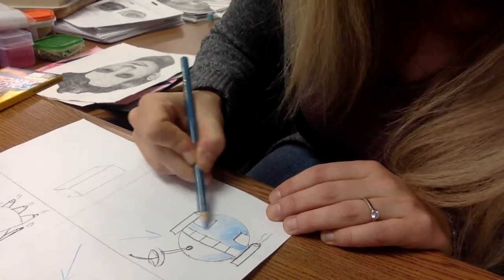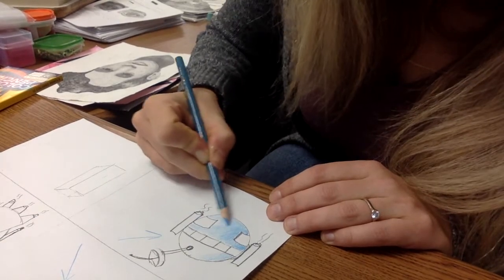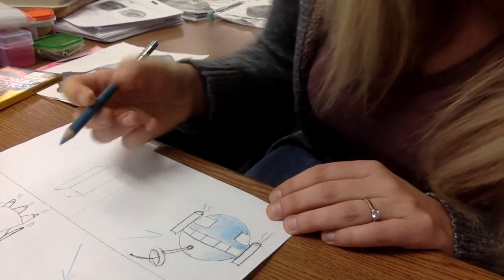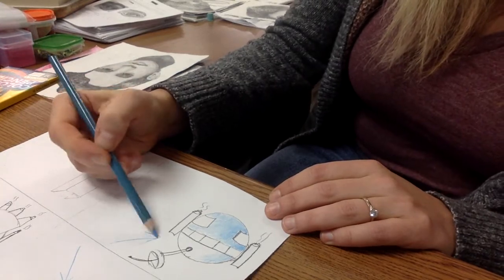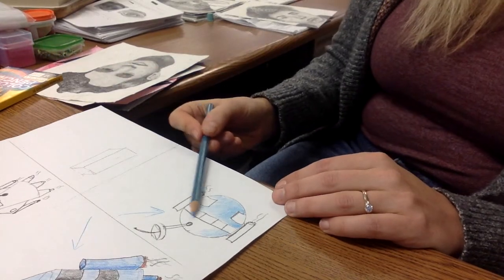Because just like with the pencil, colored pencil takes time and it takes little circular motions. So if I am shading a sphere, it's going to be light to dark.